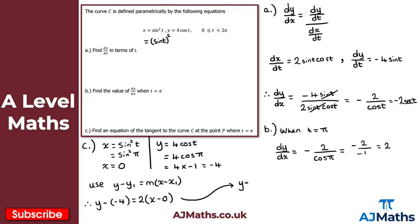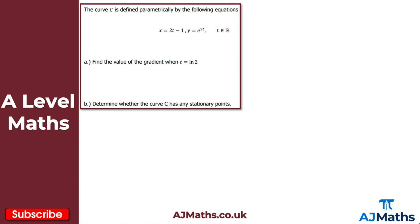Rearranging into y = mx + c form, we subtract 4 from both sides to get y = 2x minus 4. That's the equation of the tangent to curve C at point P where t = π. That completes our solution to question two.